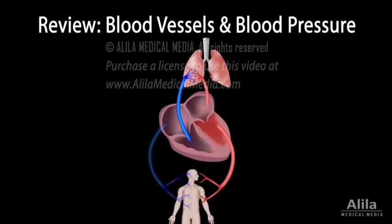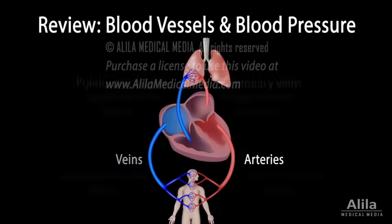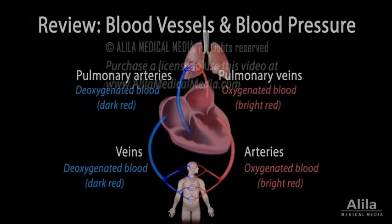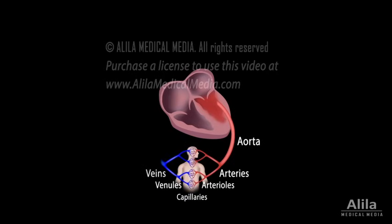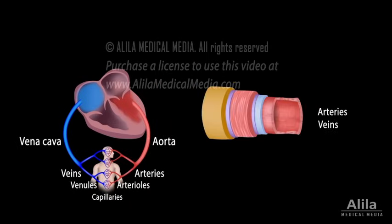Blood moves away from the heart in arteries and back in veins. Blood flows from the heart to the aorta, to large arteries, then smaller arteries, arterioles, capillaries, then venules, larger veins, and back to the heart.